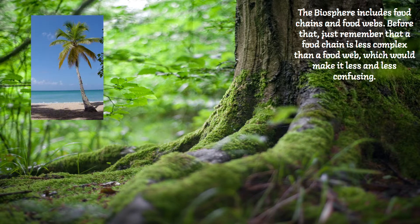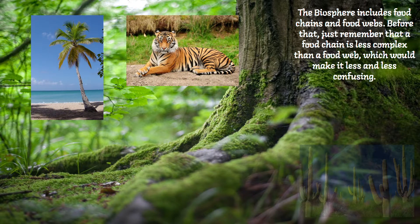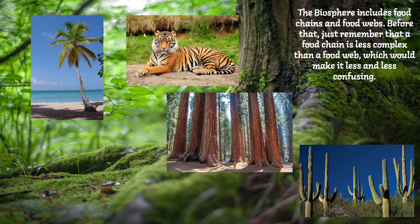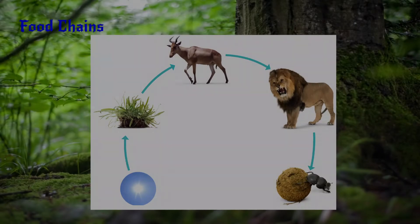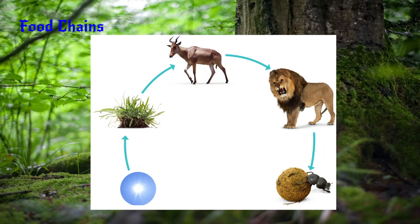The biosphere includes food chains and food webs. You may have heard of them and they aren't hard to understand. They're both very connected deeply. For example, the food chain is a simpler model of the food web. To show this we're going to compare two pictures and try to understand what each one is showing.